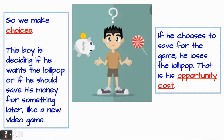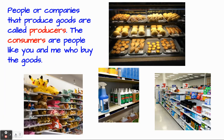Sometimes there are choices just in our wants as well. This boy is deciding if he wants the lollipop or if he should save his money for something later, like a new video game. If he chooses to save for the game, he loses the lollipop. That is his opportunity cost — that's what it cost him to make the choice to wait to spend his money.